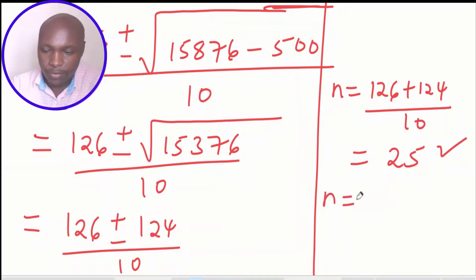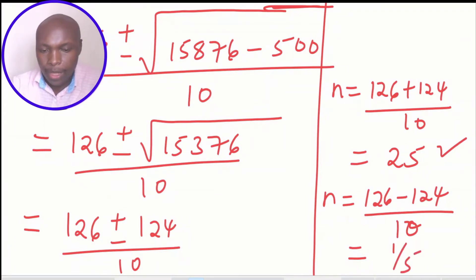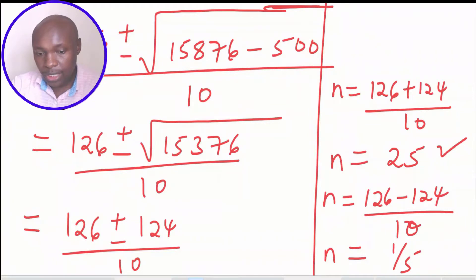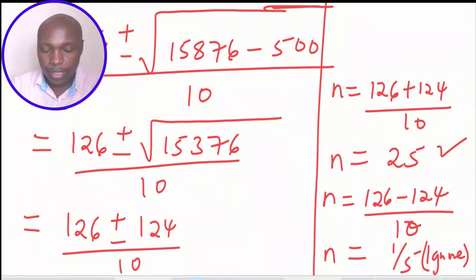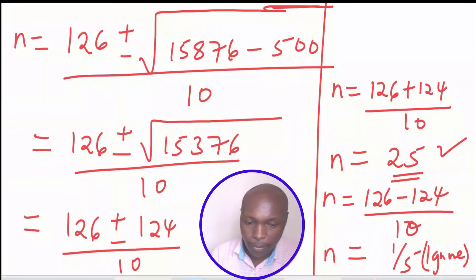The second value: 126 minus 124 equals 2, divided by 10 gives N equals 1 over 5. Since N represents the number of items, it cannot be a fraction, so we ignore this solution. Therefore the number of items produced at a cost of 756 shillings is 25 items. And that is how you solve that question. We'll see you next time.